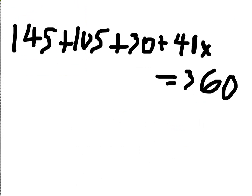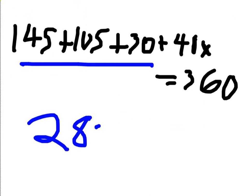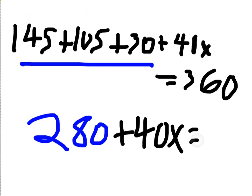Let's just add these first three together. So 145 plus 105 is 250, plus 30 is 280. And so this is going to simplify to 280 plus 40x equals 360.